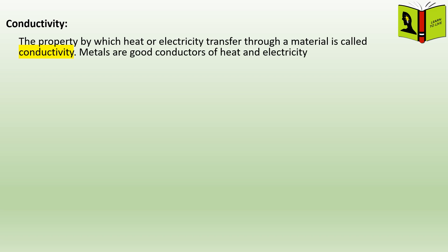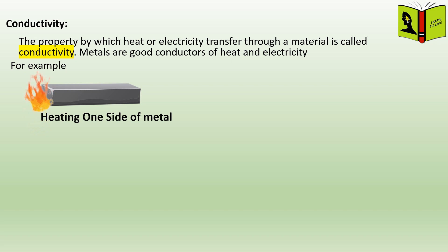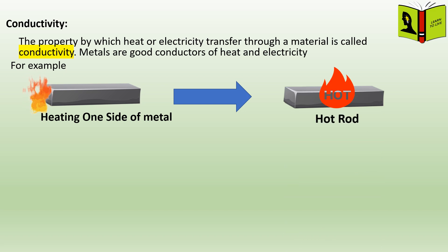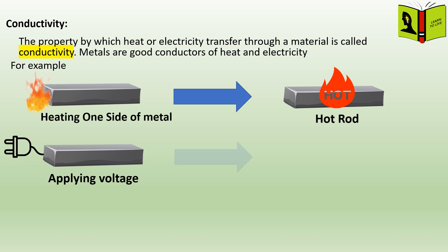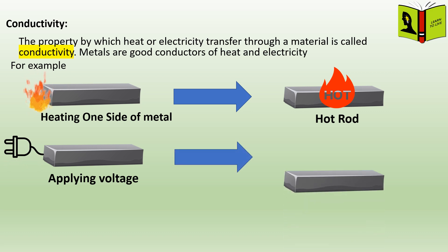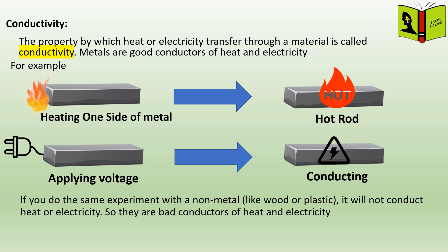Conductivity. The property by which heat or electricity transfers through a material is called conductivity. Metals are good conductors of heat and electricity. For example, if we heat a metal at one side, after some time we can observe that the metal has become hot in the other areas also. This shows that metals are good conductors of heat. Similarly, if we apply a voltage through a metal rod, we observe that it passes the electricity. If you do the same experiment with a non-metal, it will not conduct heat or electricity — so they are bad conductors of heat and electricity.